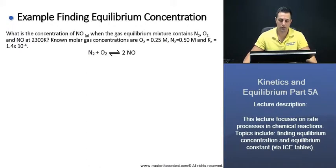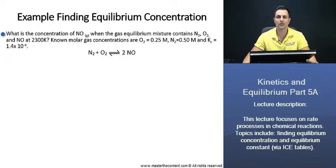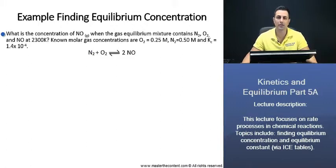Your career, our passion. Finding the equilibrium concentration. What is the concentration of nitric oxide when the gas equilibrium mixture contains nitrogen, oxygen, and nitric oxide at 2300 Kelvin? Known molar gas concentrations are: for oxygen, 0.25 molar; for nitrogen, 0.5 molar; and the equilibrium constant is 1.4 times 10 to the power of negative 4.